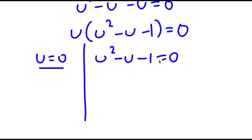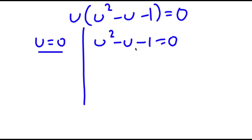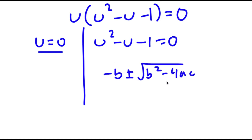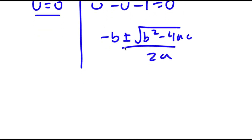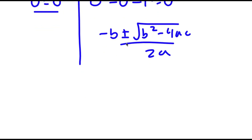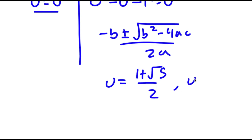To solve u squared minus u minus 1 equals 0, we use the quadratic formula: negative b plus or minus the square root of b squared minus 4ac over 2a. You should end up getting u equals (1 plus the square root of 5) over 2, and u equals (1 minus the square root of 5) over 2.